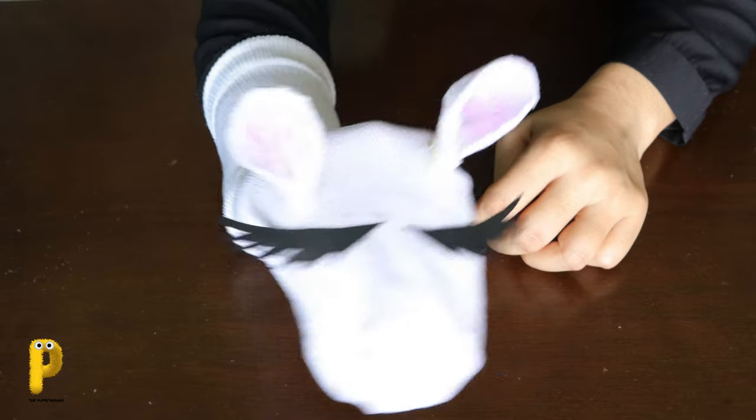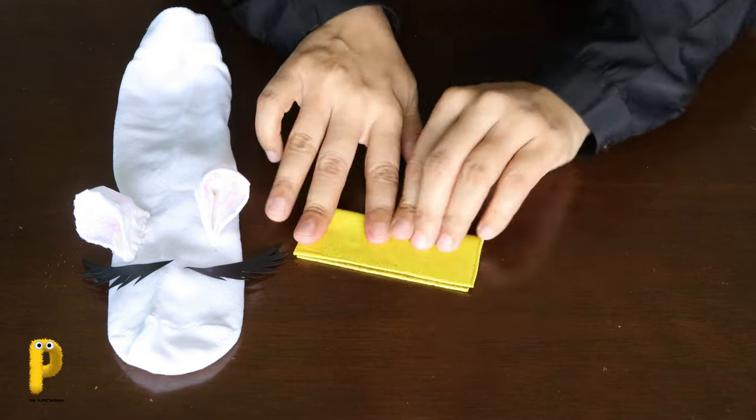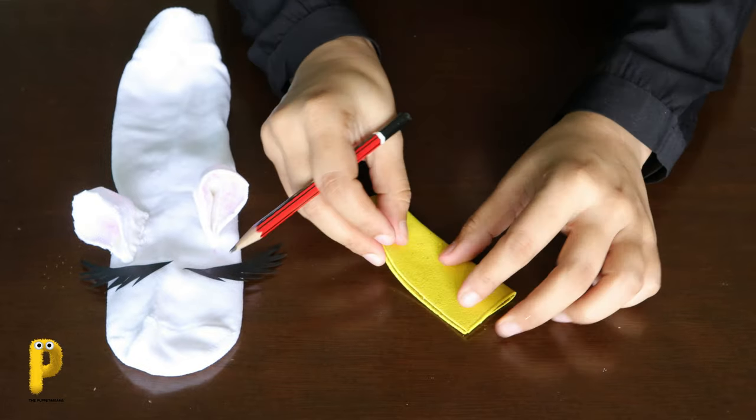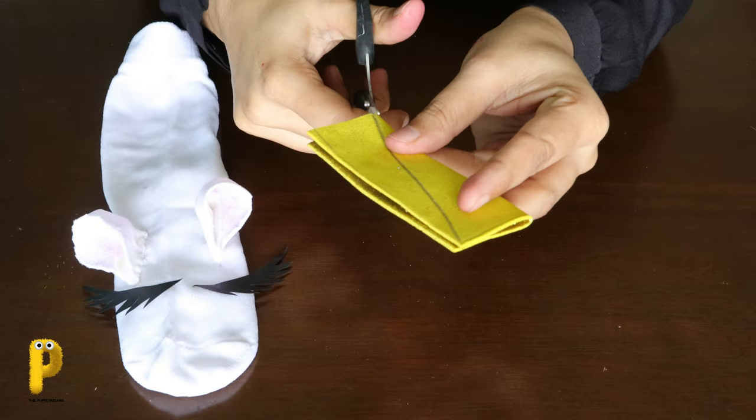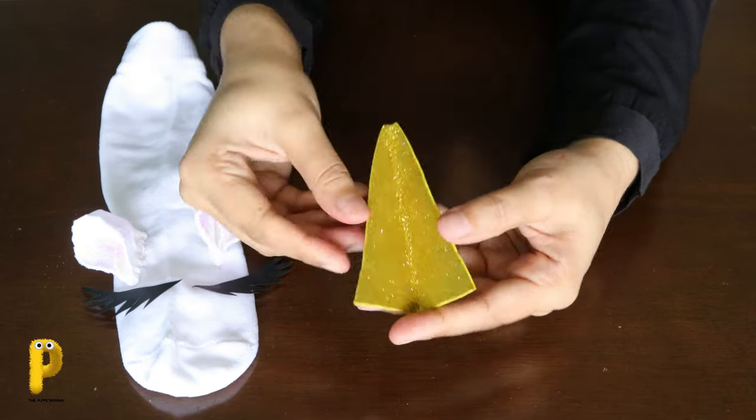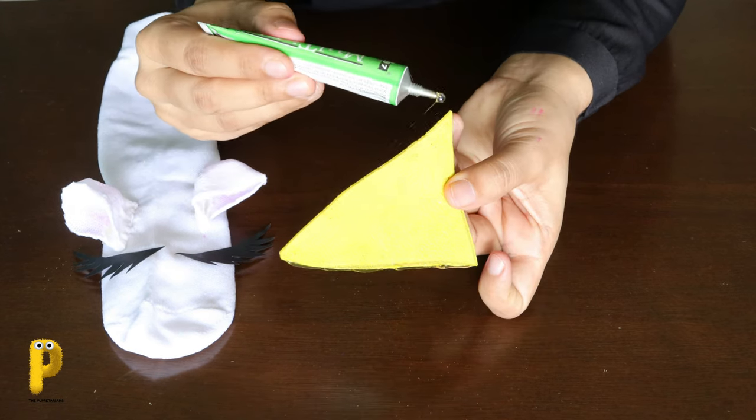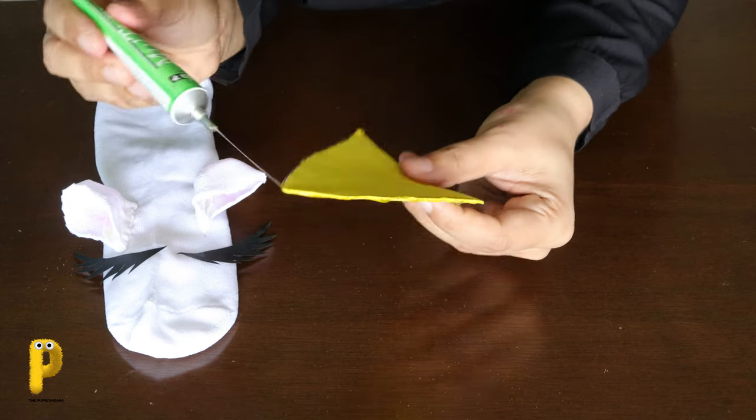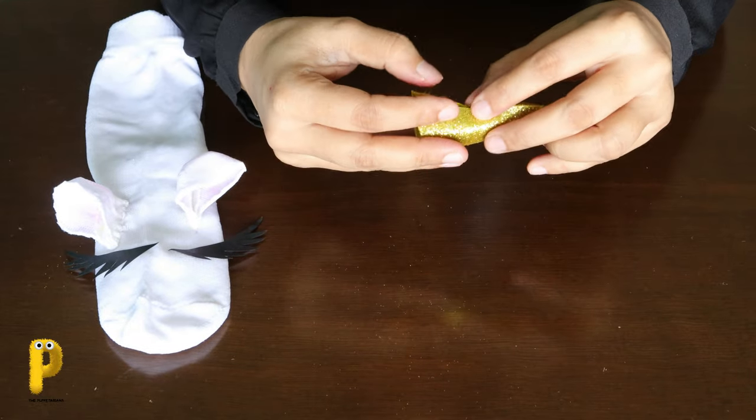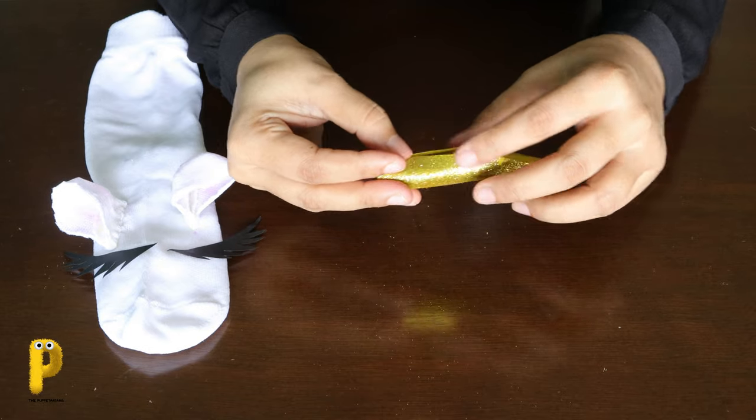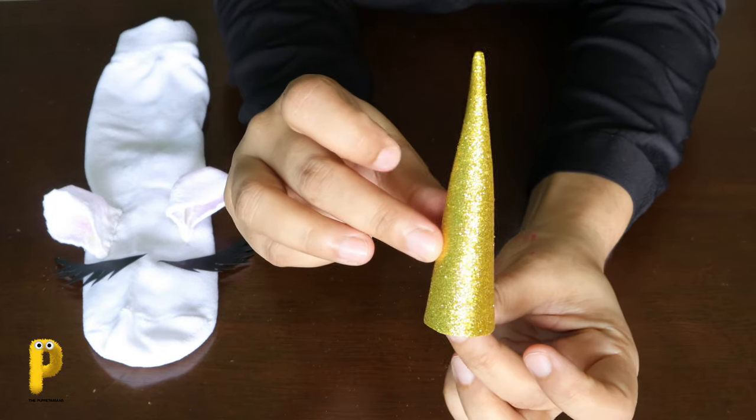But wait, it's not done yet. Let's make the horn. Yes, the golden horn. For this, take some golden paper. Fold it in half. And draw a diagonal line. Cut it so that you have a big triangle. Now put some glue on the edges of the triangle and stick them together to make the horn. Remember, you can make a flat horn or you can make a cylindrical horn. Now this is a cylindrical horn. The horn is ready too.